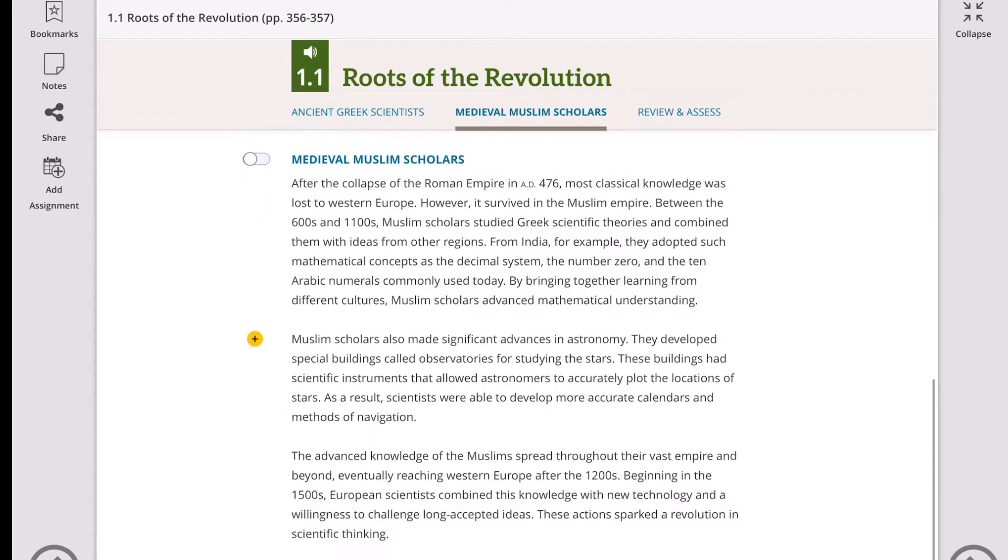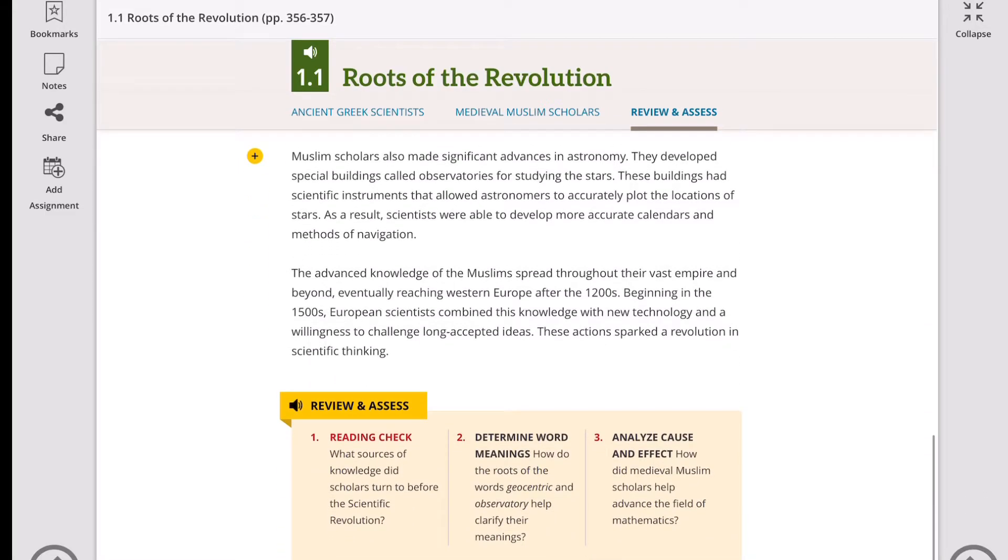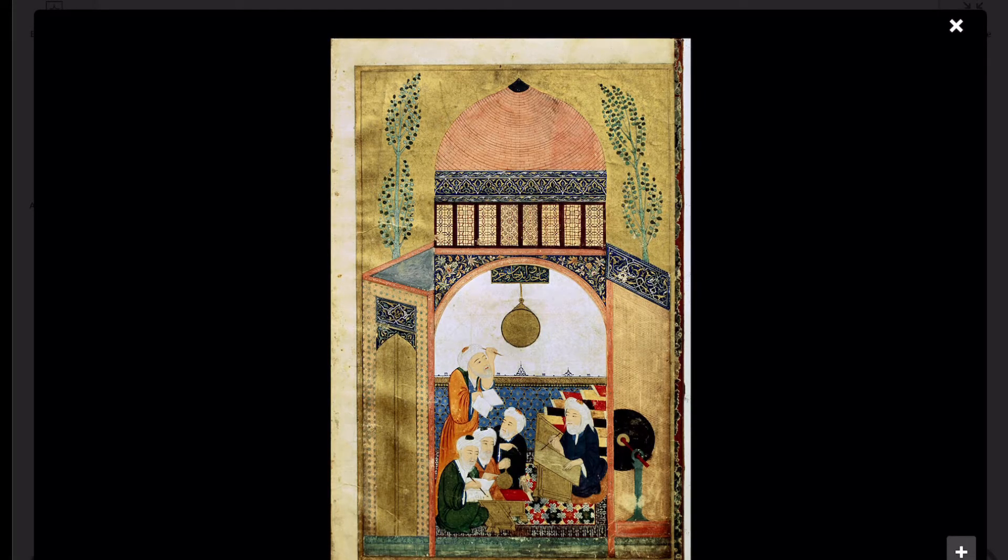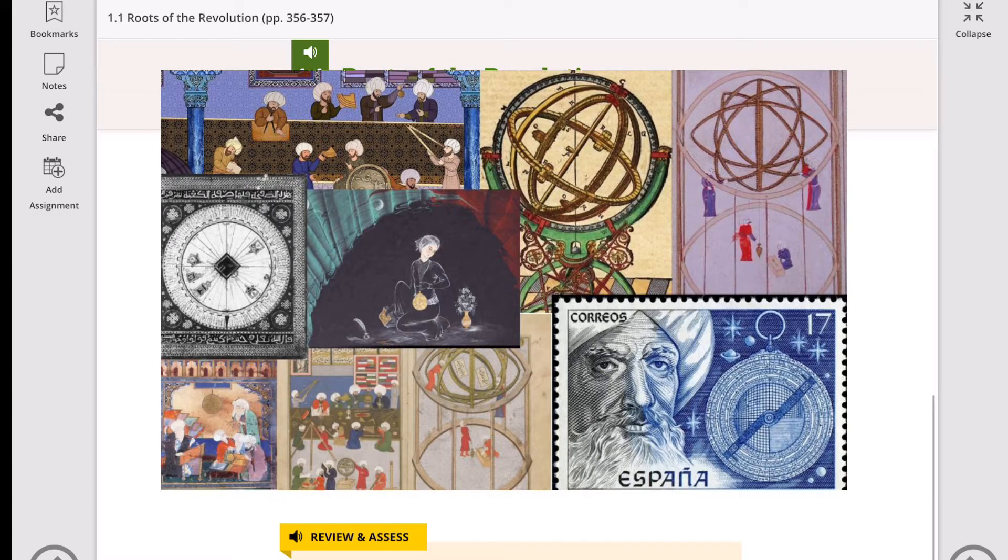These are the medieval Muslim scholars. After the collapse of the Roman Empire in 476 AD, most classical knowledge was lost to Western Europe. Between the 600s and 1100s, Muslim scholars studied Greek scientific theories and combined them with ideas from other regions. For example, in India they adopted mathematical concepts like the decimal system, the number zero, and the ten Arabic numerals commonly used today. By bringing together learning from different cultures, Muslim scholars advanced mathematical understanding. Muslim scholars also made significant advances in astronomy. They developed special buildings called observatories for studying the stars. These buildings had scientific instruments that allowed astronomers to accurately plot the location of the stars. As a result, scientists were able to develop more accurate calendars and methods of navigation.